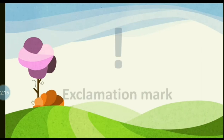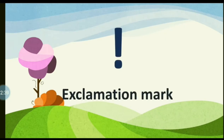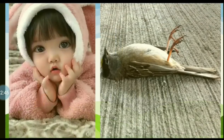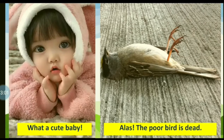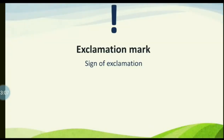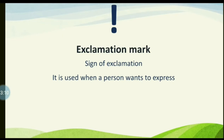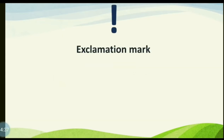The next punctuation mark is the exclamation mark. Look at these pictures — what do you think when you see the picture on your left? 'What a cute baby!' Now look at the picture on your right: 'Alas! The poor bird is dead.' We use the exclamation mark when we want to express strong feelings or emotions.